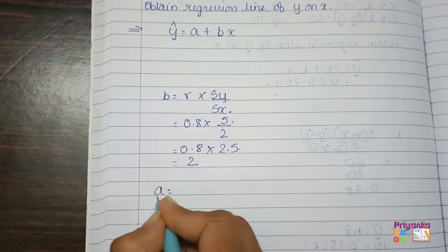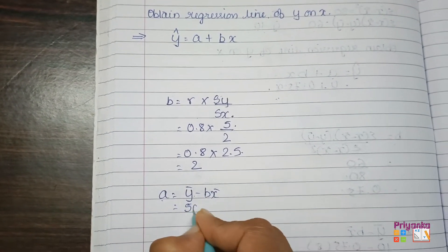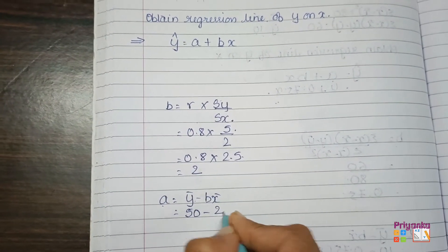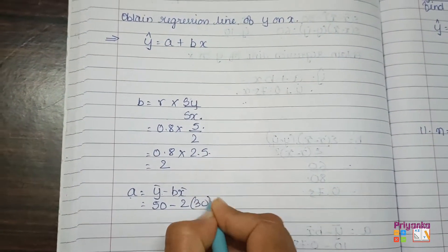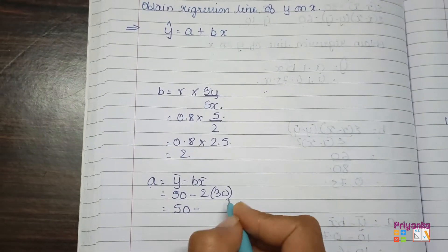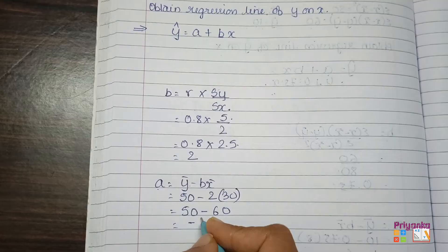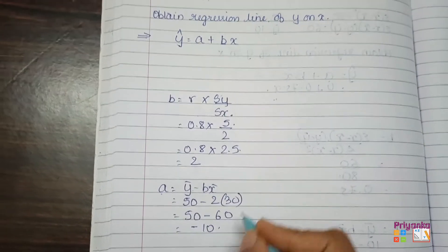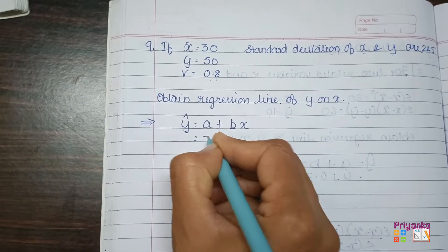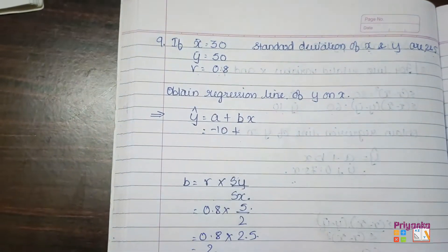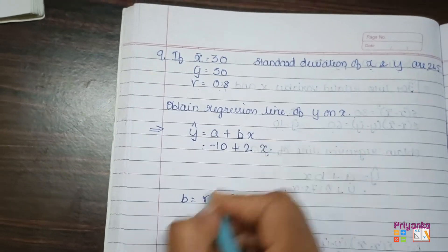Next, find a = ȳ minus b·x̄. Here ȳ = 50, b = 2, and x̄ = 30. So 50 minus 2 × 30 = 50 minus 60 = −10. Now placing the values in the regression line: y-cap = −10 + 2x.